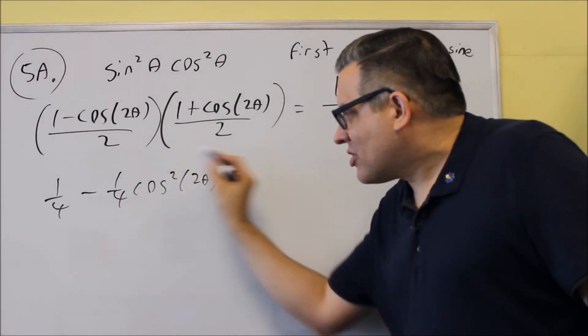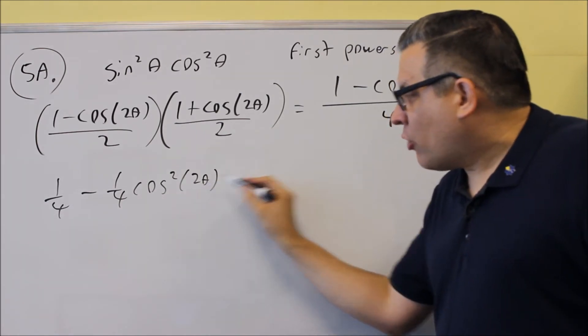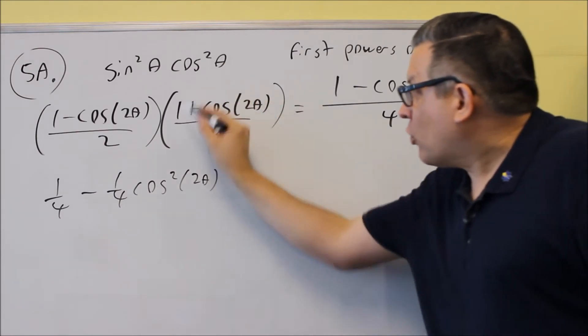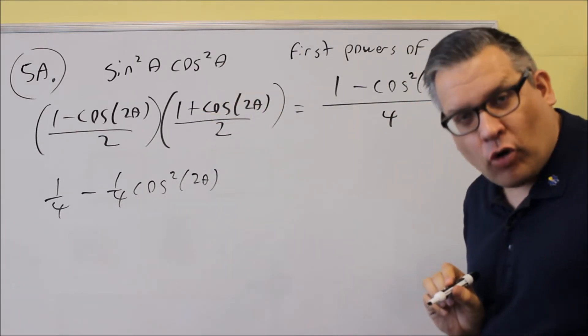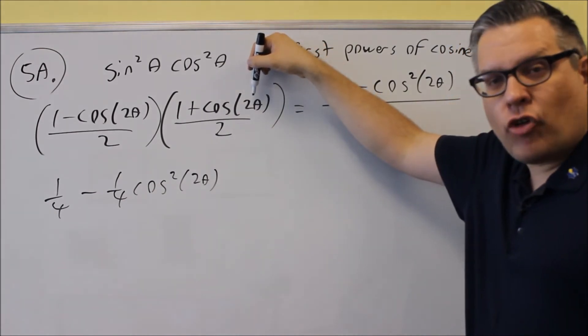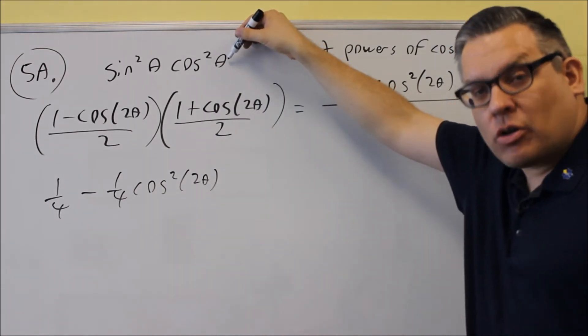I'm going to do exactly the same thing with this one except that when I use the power reducing formula here because the original angle inside was a 2 theta, when I write this out that will become a 4 theta because that's how the formula works. The power reducing formula, you always end up with double the angle from what you started with.